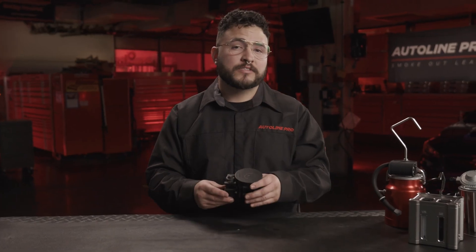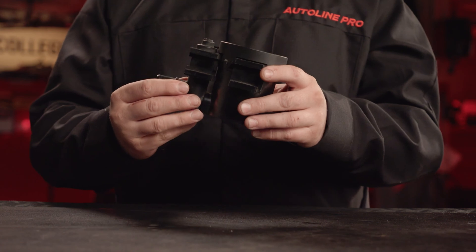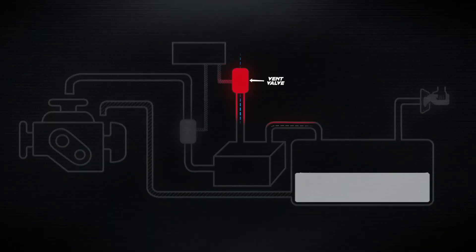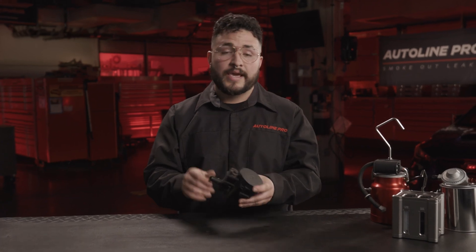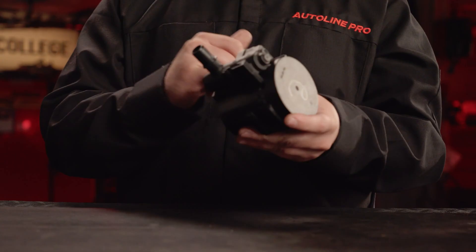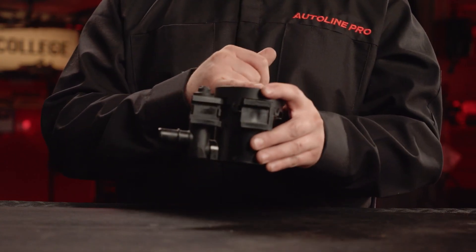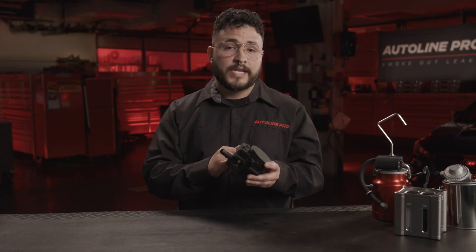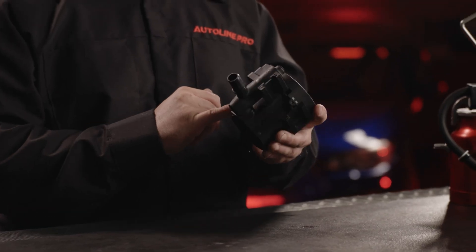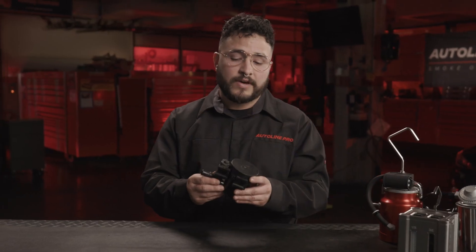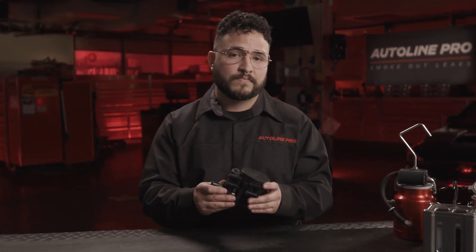The next component is the vent valve. The vent valve is usually connected straight to the canister, which means to access this component you're going to have to lift up the vehicle. It has an inlet port, an outlet port, and a connector for it to be actuated. Naturally the vent valve is open, and when charged, it's closed. The vent valve is controlled by the power control module when conditions are appropriate within the evaporative emissions system.